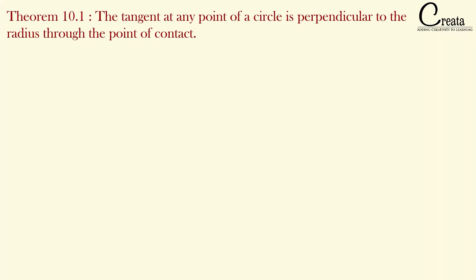Theorem 10.1 states: The tangent at any point of a circle is perpendicular to the radius through the point of contact. First, let's understand the concept, then we will go to the proof.